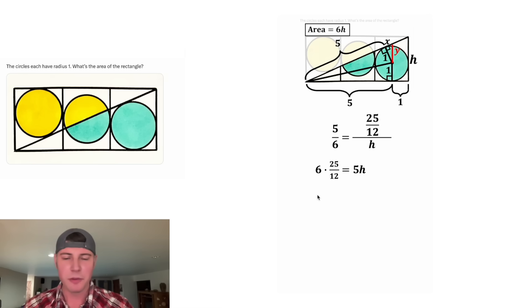Let's simplify this side first. The 6 times 25 over 12 will simplify to 25 halves. That's because this 6 and the 12 simplified to 1 half. And then to get this h by itself, we can multiply both sides by 1 fifth. On this left-hand side, the 25 and the 5 will simplify, leaving us with 5 halves. And on the right-hand side, we just have h. And now we know the height of our rectangle.